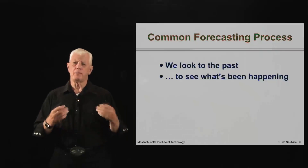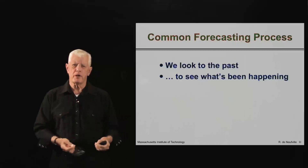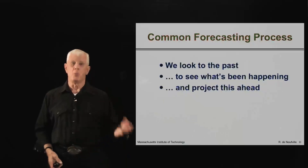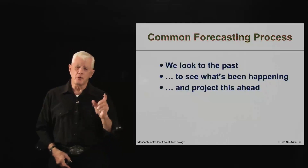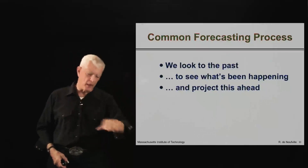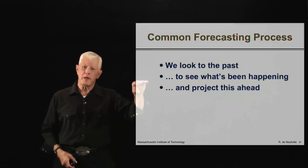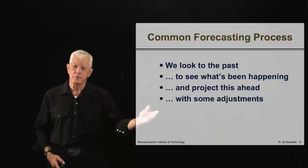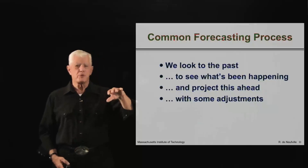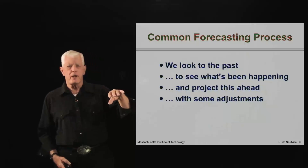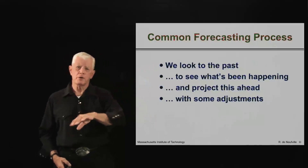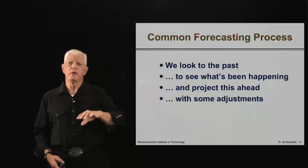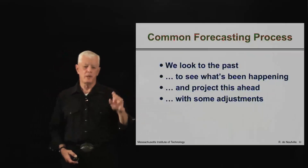The natural thing when anybody is creating a forecast is to look to the past to see what has been happening. Step one is: what's happened? So you look to the past, see what's been moving up or down, whatever the trend is, and you project this ahead. You want to project it ahead taking into account some adjustments — people are using more or less of it — so you don't just project ahead in a straight line or an exponential line. You adjust it some way. That's the common activity.